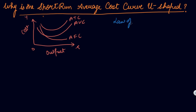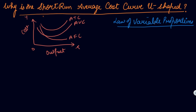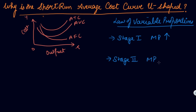In previous lectures we covered the law of variable proportions. This law states that as more and more variable factors are attached to fixed factors, a stage must ultimately come when marginal product from each additional unit of variable factor starts decreasing. We studied three stages: stage one when marginal product is increasing, stage two when marginal product starts decreasing, and stage three when marginal product becomes negative.